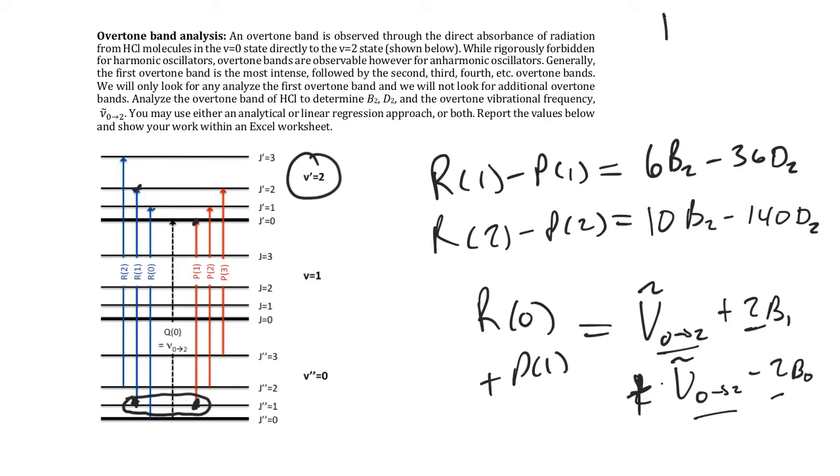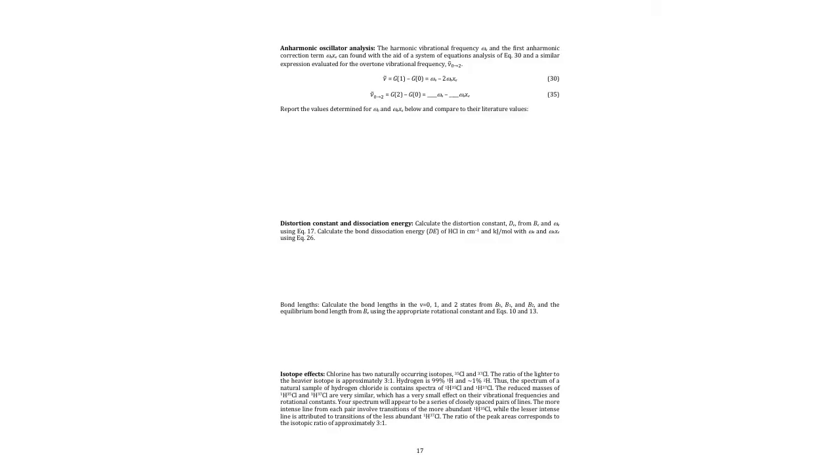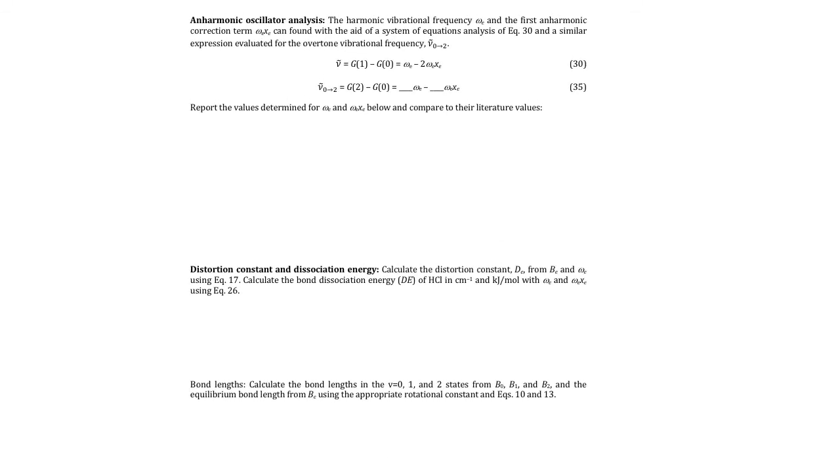Sometimes people mistakenly determine B0 and D0 and think it's B2 and D2. Remember, our B0 is around 10.4. Our B1 is around 10.1. And our B2 is going to end up probably around 9.8 or 9.9, somewhere in that ballpark. So if you see your values coming closer to 10.4, we probably have chosen the wrong system. So make sure you're doing the R1 minus the B1, the R2 minus the P2, etc.